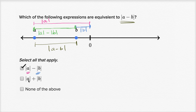Now, what about the absolute value of a plus the absolute value of b? Well, that would be taking this magenta distance — the absolute value of a — and then adding it to this blue distance — the absolute value of b. So this would give you a larger distance than the distance between those two points.